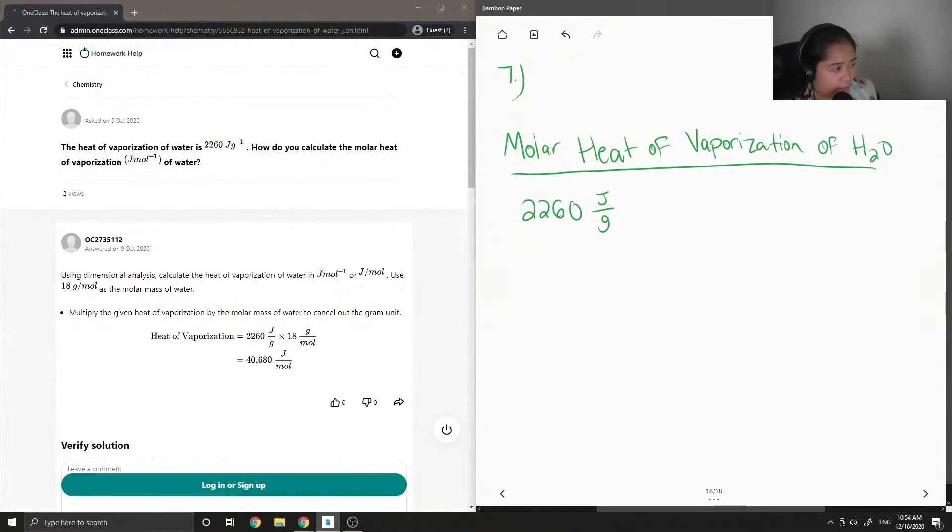So the heat of vaporization is 2260 joules per gram. To calculate the molar heat of vaporization, which is for one mole of water, we need to just multiply by the molar mass of water. We do that to cancel out the grams and to get our answer in joules per mole.